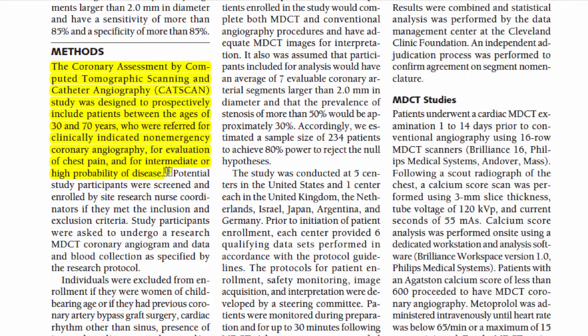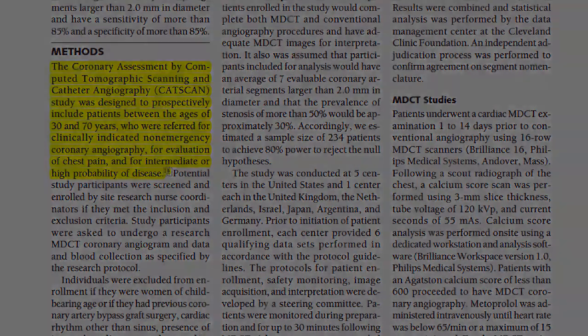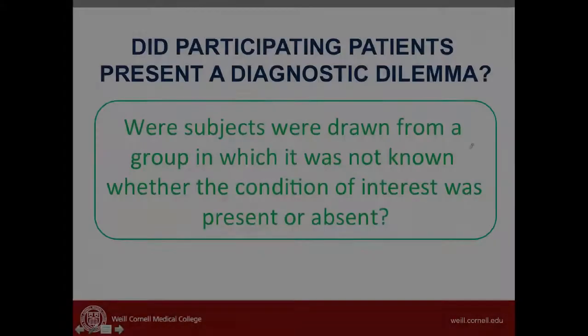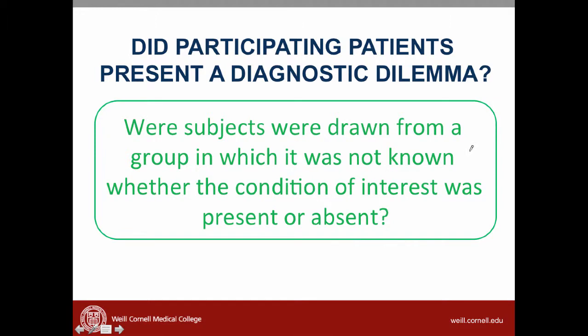All these patients had a possibility of coronary disease, but it wasn't fully determined if they had that disease. So going back to this question, we're going to give that a check mark — the patients were drawn from a group where it was unclear whether the condition of interest was present or absent.